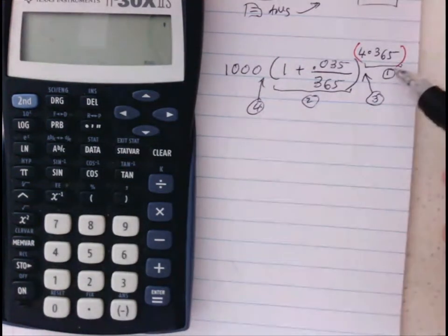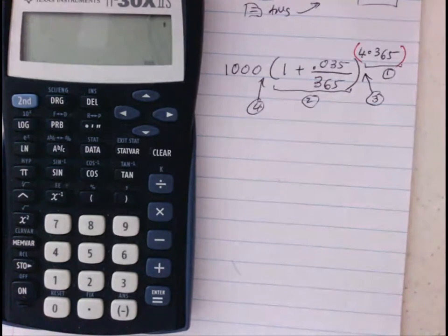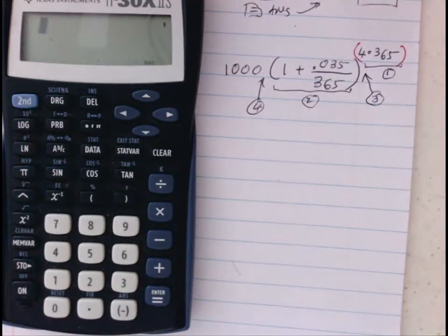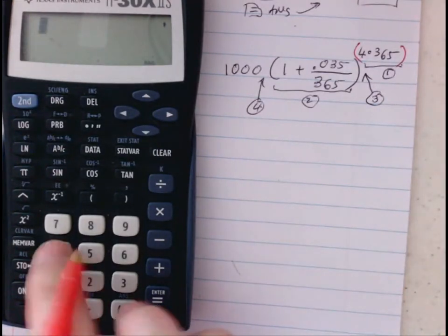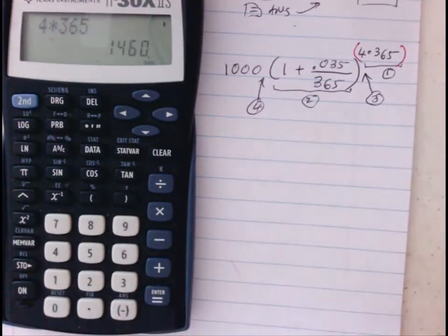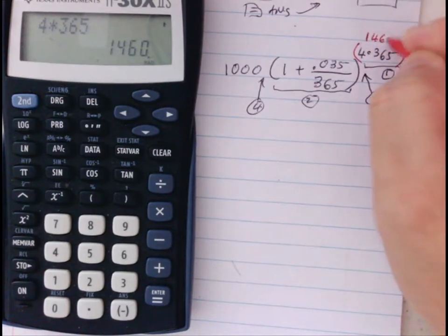I choose to do the exponent first because as you will see it's more natural in the sequence of using the previous answer feature but also because the exponent is a nice integer. So let's do that. So 4×365 equals 1460. For this one, I do need to write down the number 1460.